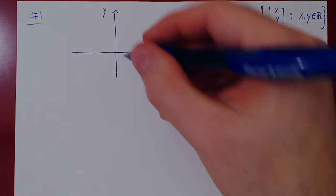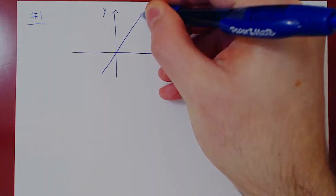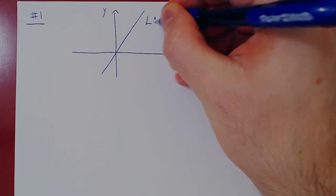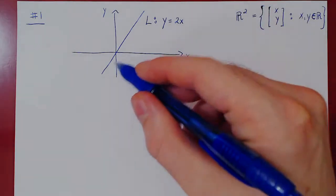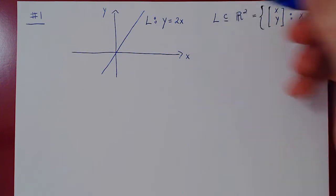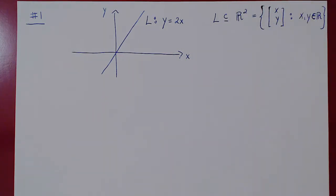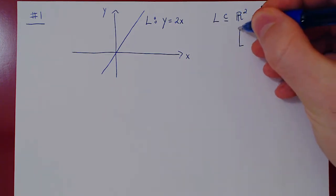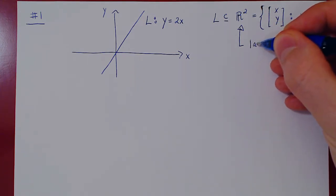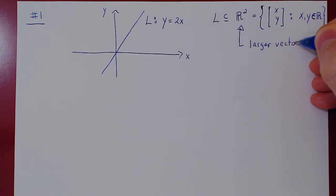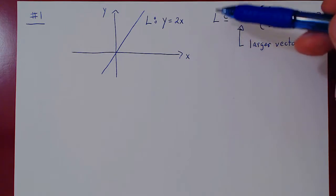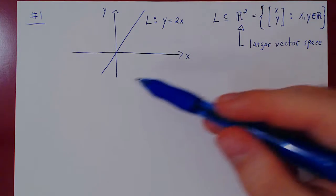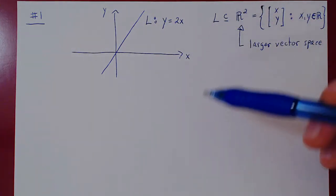Consider a subset of R2: quite simply the line y equals 2x. Clearly L is a subset of R2, since every point on this line is a point in the xy plane. We know R2 is a vector space — Rn for any positive n is a vector space — so R2 plays the role of our larger vector space. We can now use the subspace theorem to decide whether L is a subspace of R2, by checking closure under addition and closure under scalar multiplication.